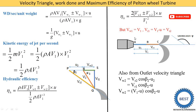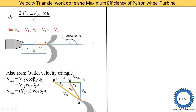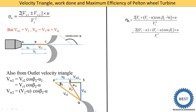Putting VW1 equals V1 and VW2 equals (V1 minus U)*cos(beta2) minus U into the hydraulic efficiency equation: after simplification, (V1 minus U) terms are grouped and (V1 minus U) is taken as common factor, giving the final equation: eta_h equals 2*(V1 minus U)*(1 plus cos(beta2))*U divided by V1².